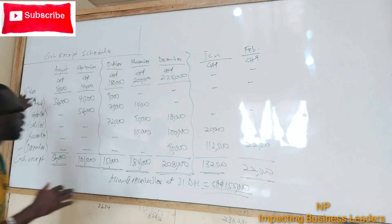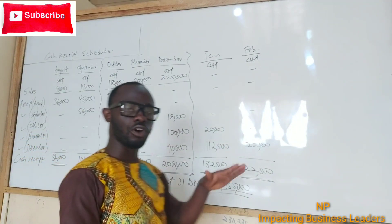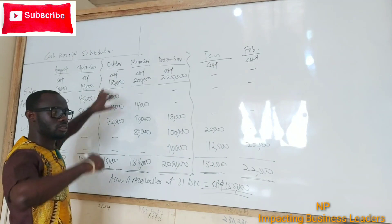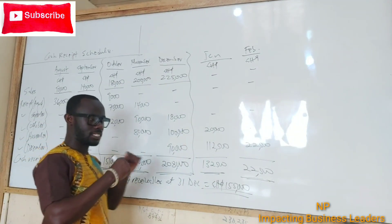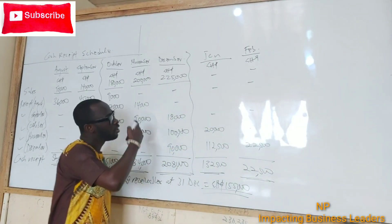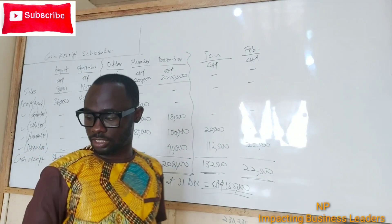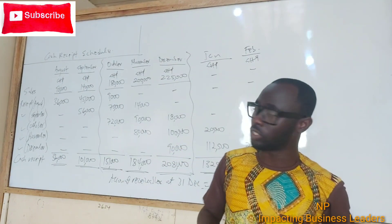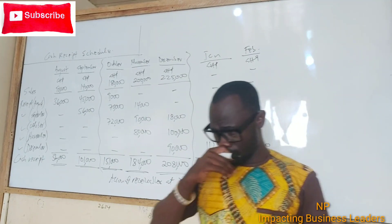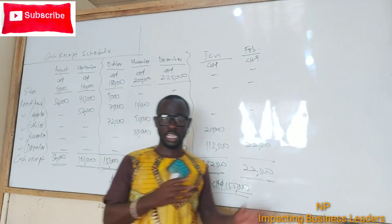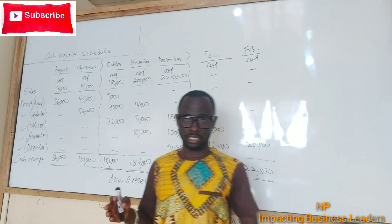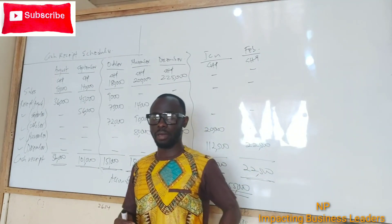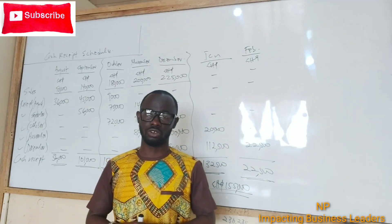You must understand how the schedule flows based on what is given in the question: 40% in the month of sales, 50% in the month following sales, and 10% the second month following the sales. That's it for this question on budgeting. Comment below with any questions or topics you want us to cover in this management accounting series, share this video, and remember to subscribe to the channel. I'll see you in the next video.